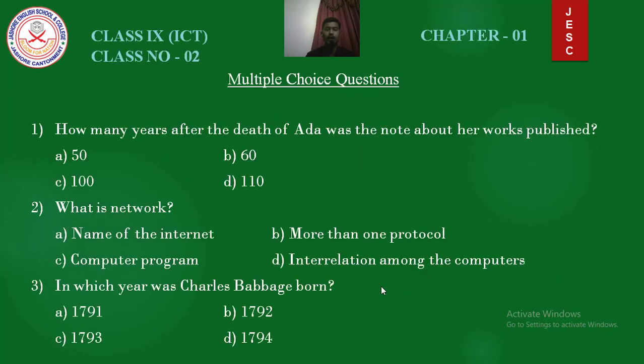Question number 1: How many years after the death of Ada was the note about her works published? Options: 50 years, 60 years, 100 years, 110 years. Answer is 100 years. Question number 2: What is a network? Options: name of the internet, more than one protocol, computer program, interrelation among the computers. Answer is interrelation among the computers.